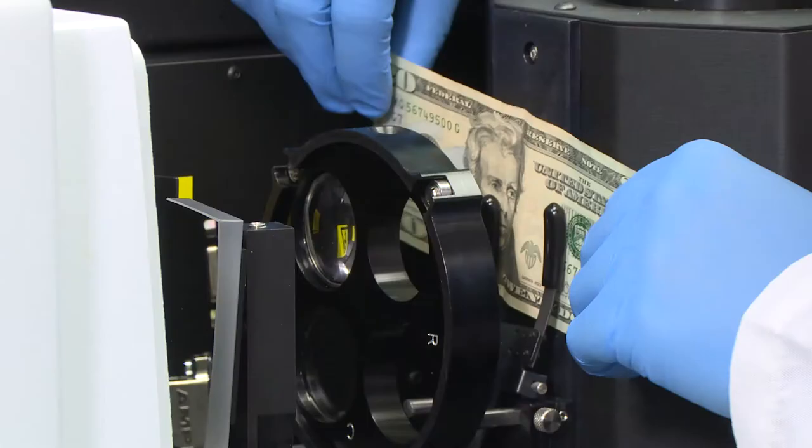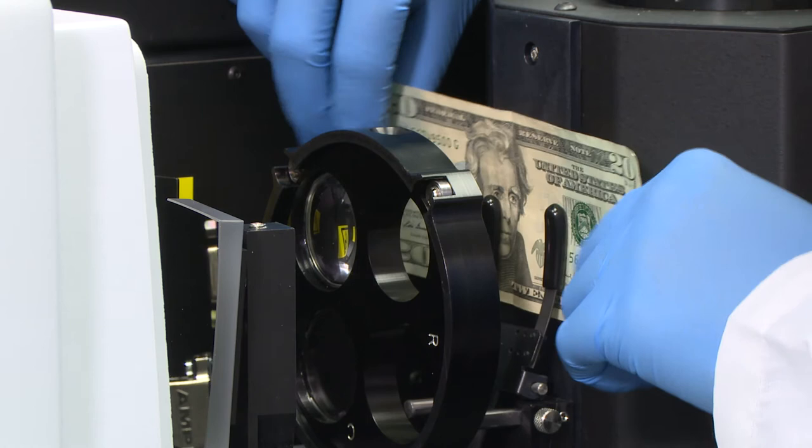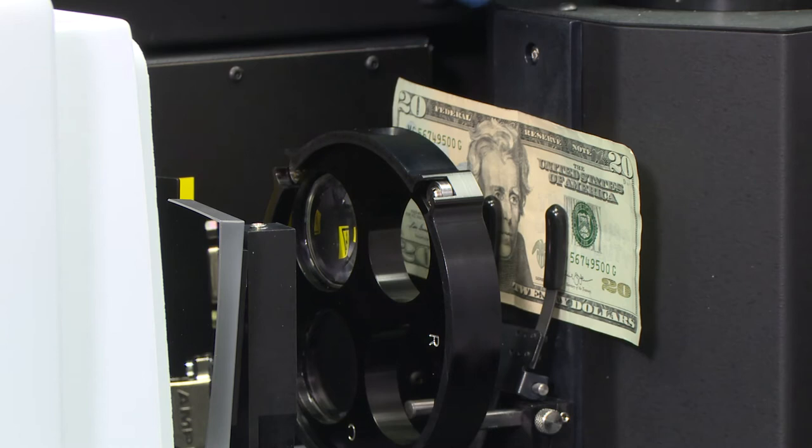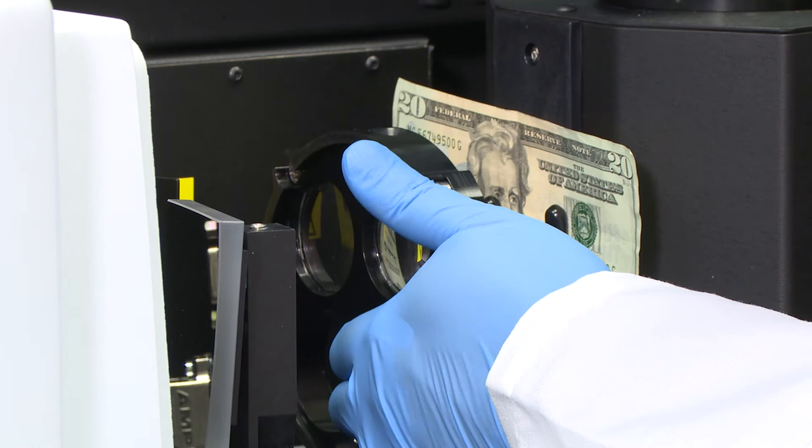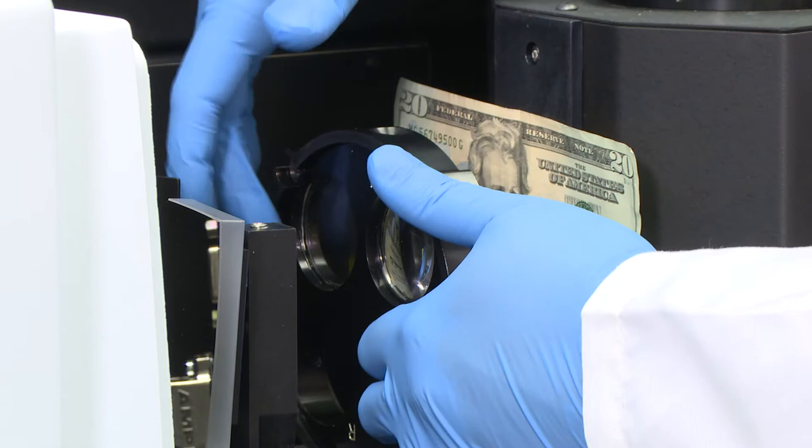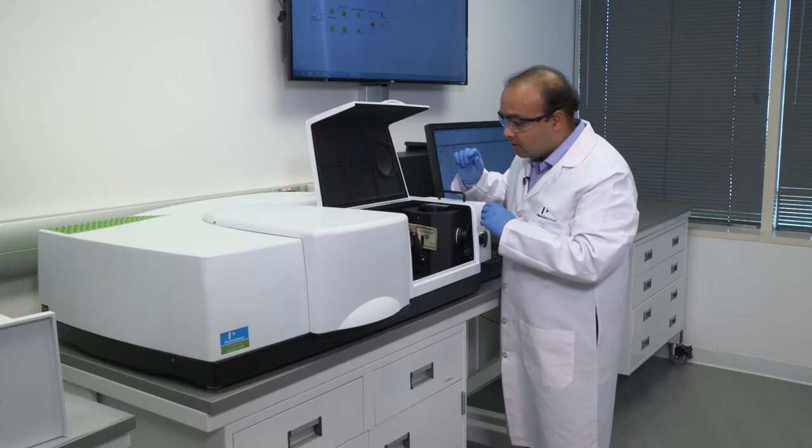Now in the next example, we'll position a $20 currency note that has different ink patterns on the surface here, and really show the importance of having a small spot accessory. Now this accessory has two different kinds of lenses, a transmission lens here that will focus the beam right on the transmitted port, and also a different reflectance lens that will focus the beam on the back port here.